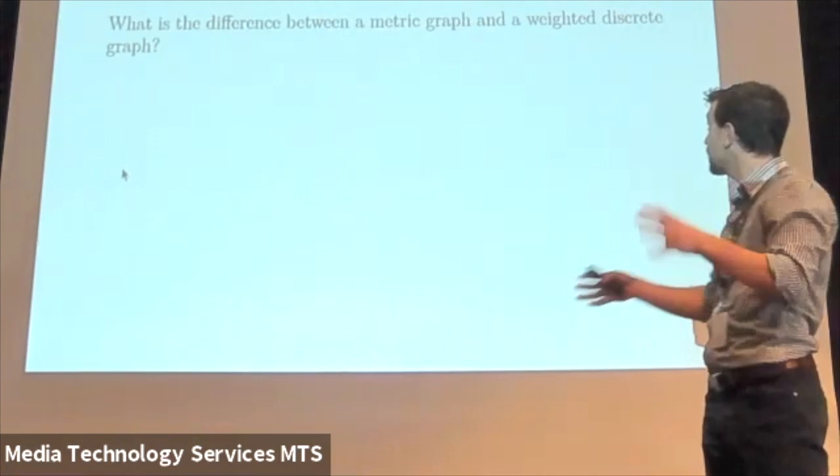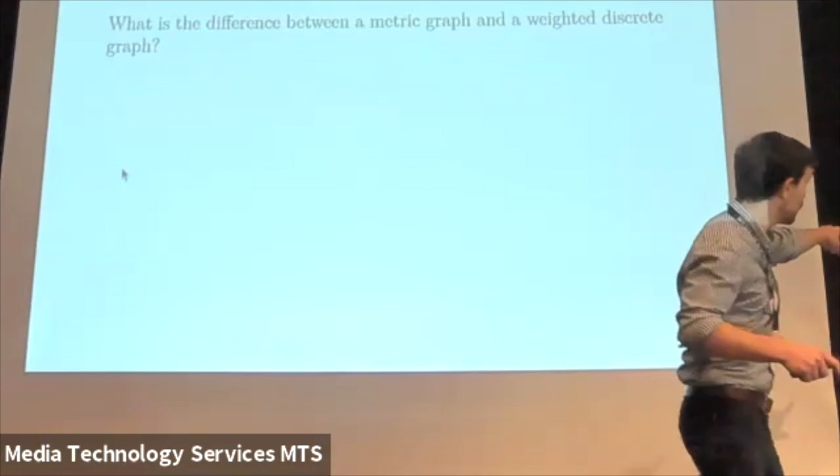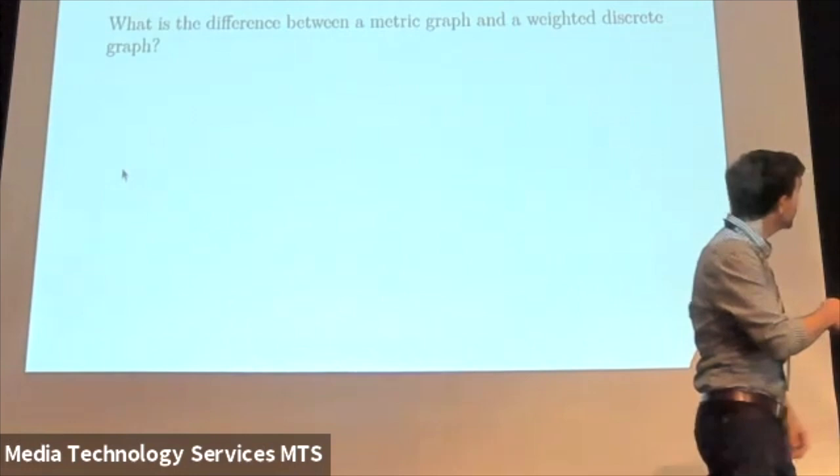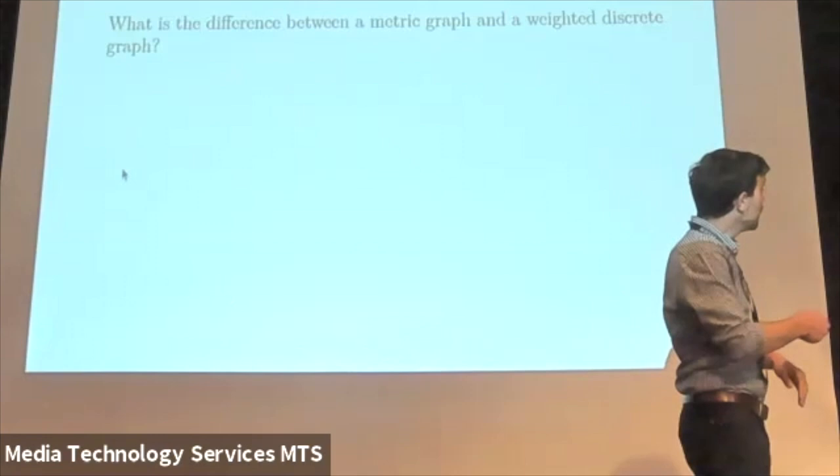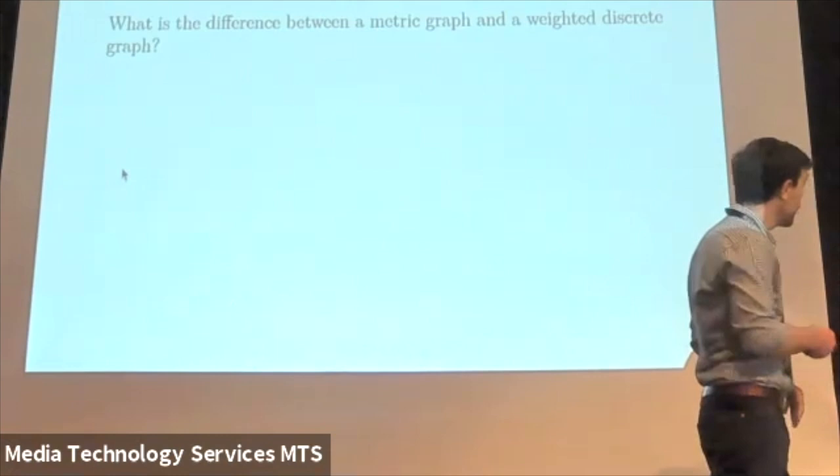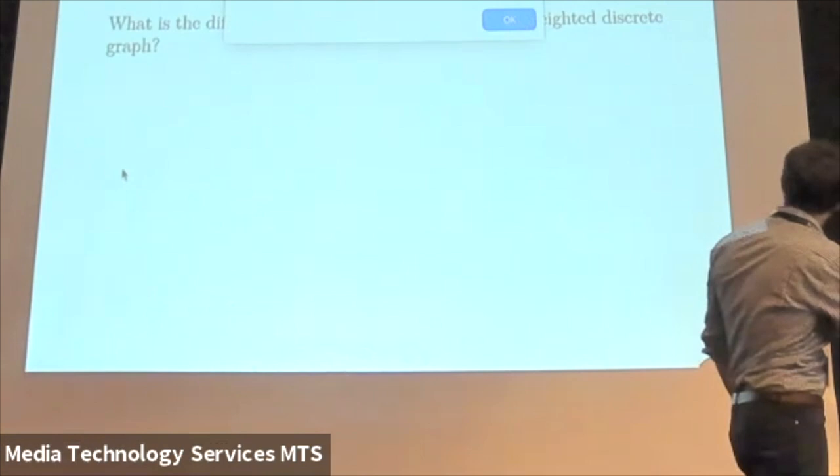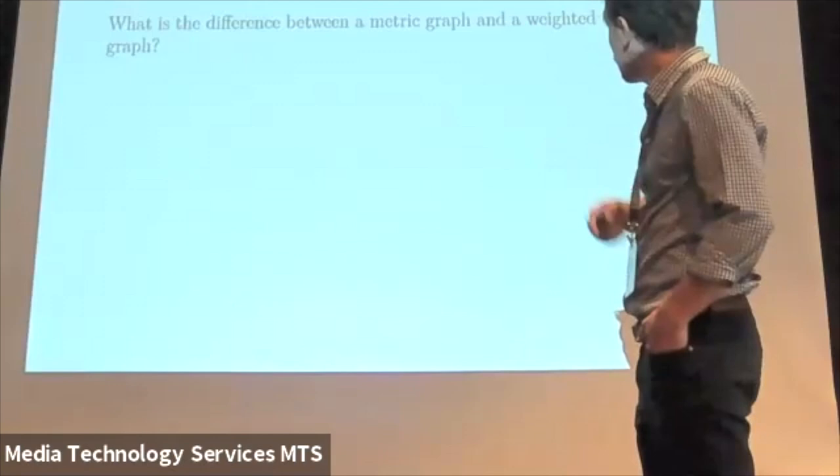So I'm sorry for those that can't see what I draw here on the board, but when a discrete graph, the function gets the value, whether it's weighted or not, the function gets its values on the vertices, so eventually the spectrum is going to be finite, no matter how we're looking at it. While we're talking about the metric graph, a function gets its values... okay, so back to where we are. So I explained what's the difference between a metric graph and a weighted discrete graph.